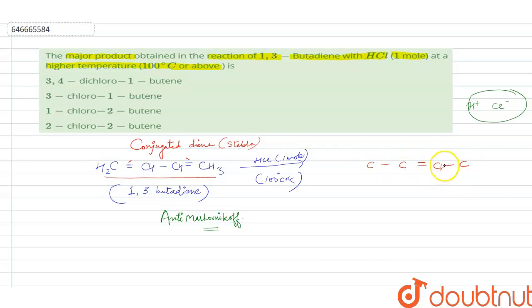And when we apply anti-Markovnikov addition, the H, meaning positively charged species, will move to that carbon which has less number of hydrogens. So H will be here and Cl will be here.